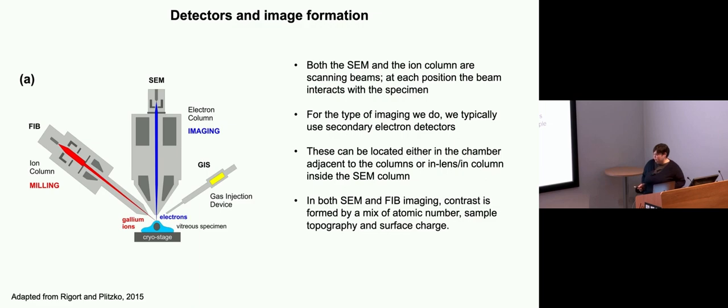So we tend to use secondary electron detectors. And we can also use these in-lens in-column detectors as well. For both of these, the images, what you see in terms of contrast is formed as a mix of the topography of the surface and the atomic number, and also charging plays a role.